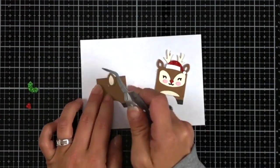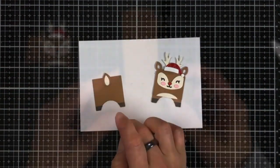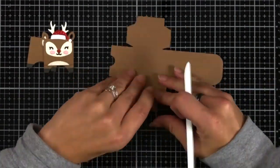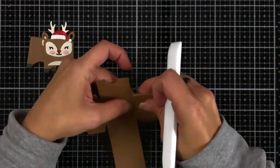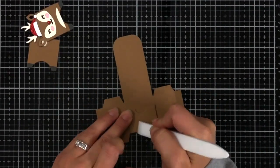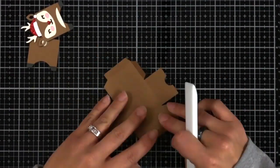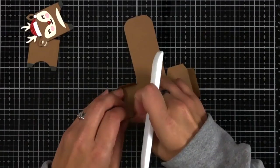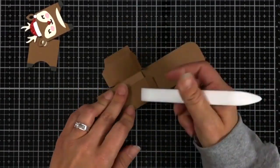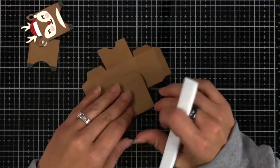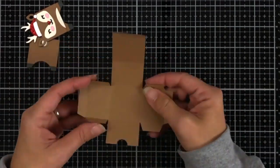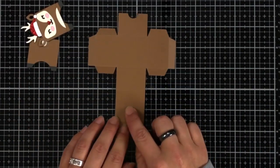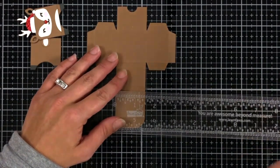So when you use the tiny gift box die, it's going to die cut out the shape of the box and put in the score lines for you. So all you need to do is go through and fold along all of those score lines and I like to just reinforce them with my bone folder. I'm not going to attach anything just yet because I need to put a hole in the top of my box where I'm going to put the string.